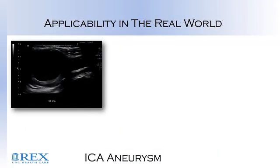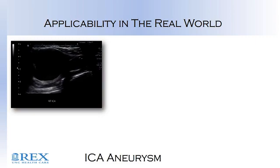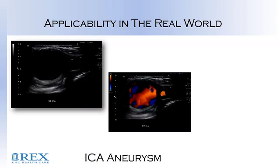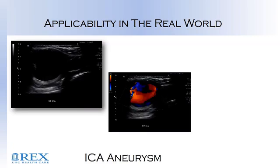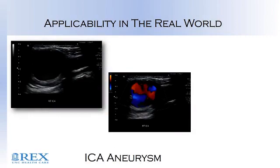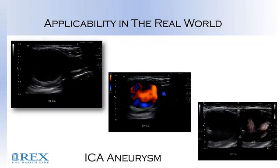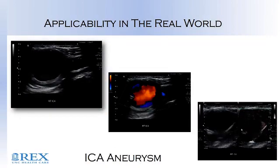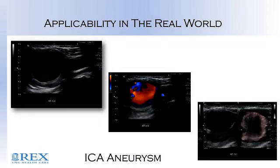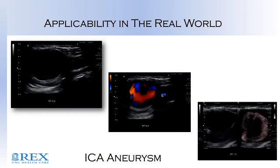With applicability in the real world with ultrasound, we need precision B-mode imaging, we need color Doppler, and I really have a big emphasis on secondary imaging parameters. This is an internal carotid artery aneurysm — pretty rare. I've seen about three in my life.